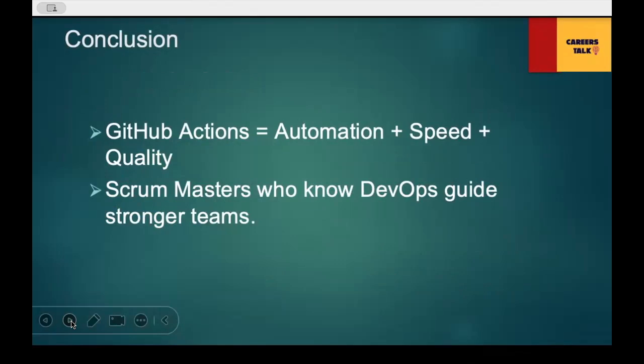To summarize: GitHub Actions brings automation, speed, and quality to agile teams. Scrum Masters who understand these basic DevOps practices guide teams more effectively and help deliver predictable and stable increments. By embracing this knowledge, you are not just a Scrum Master — you become a flow master, capable of guiding your team towards true continuous integration and delivery. This is how you differentiate yourself in today's market.